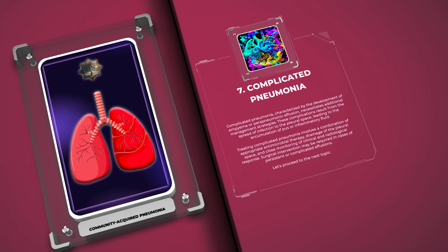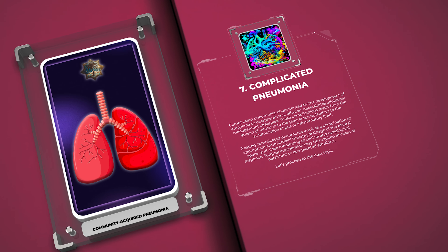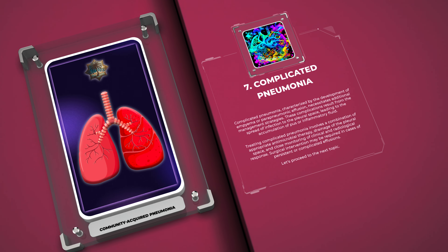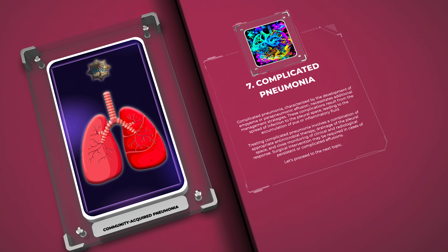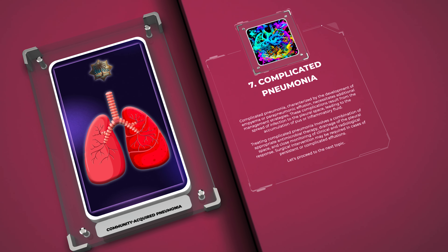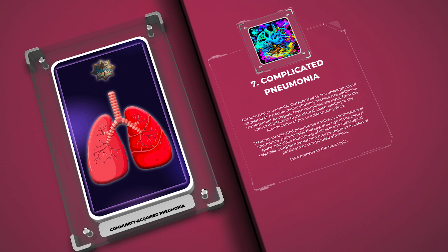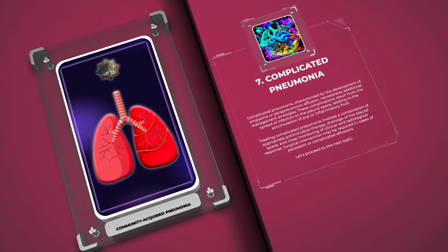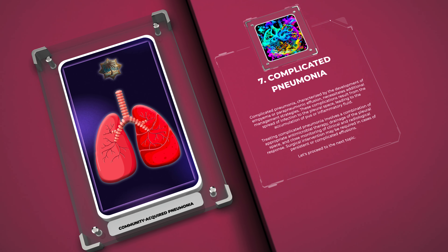Treating complicated pneumonia involves a combination of appropriate antimicrobial therapy, drainage of the pleural space, and close monitoring of clinical and radiological response. Surgical intervention may be required in cases of persistent or complicated effusions.